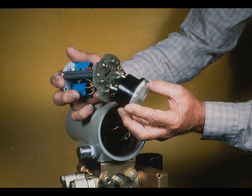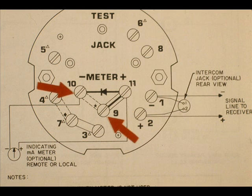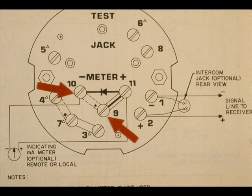Means are provided for the installation of a local plug-in type meter if desired. The upper metal link is connected from the center to the positive side of the meter terminals when a meter other than the plug-in type is used. This is terminal 9 to terminal 11. The link is connected from the center to the negative side of the meter terminals when either no meter or the plug-in type is used. This is terminal 9 to terminal 10.